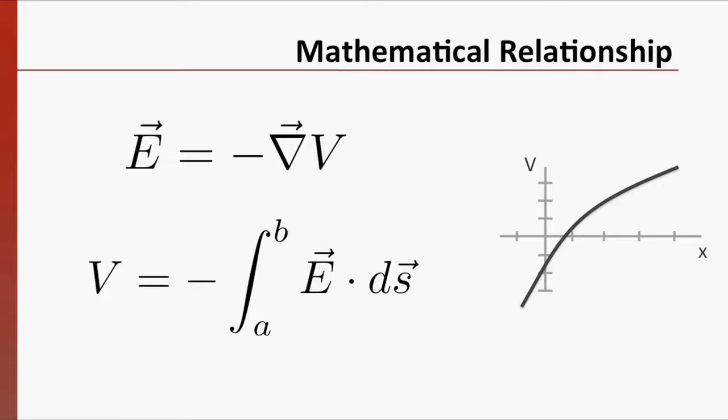The negative sign that appears in both equations is important. The electric field points in the opposite direction from any changes in the potential. If the electric potential increases in a particular direction, the electric field points in the opposite direction.